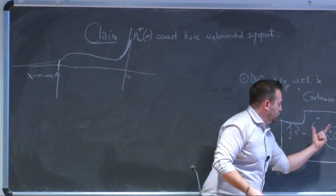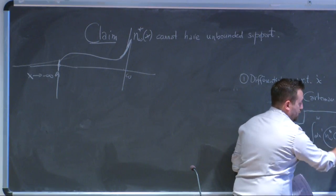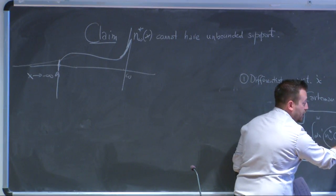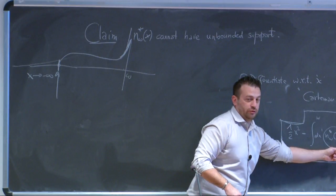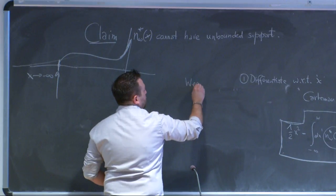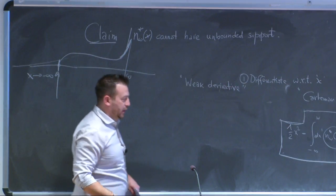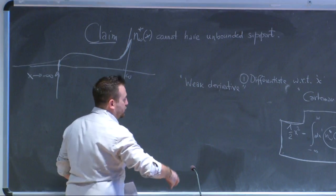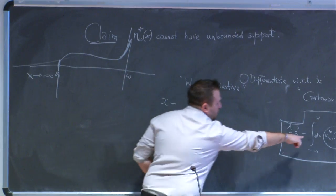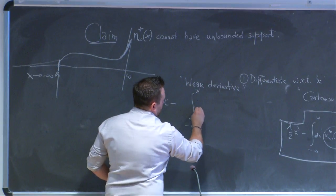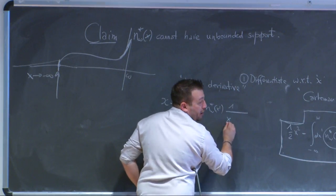If you differentiate with respect to x, you need to be extremely careful because here we have a non-analytic dependence — a logarithm of the absolute value of x. There is a formal procedure to make sense of this derivative, known as the weak derivative, which is in the notes. In the end, you differentiate and obtain an x, then formally differentiate the integral to get n*_ω(x') divided by (x − x').